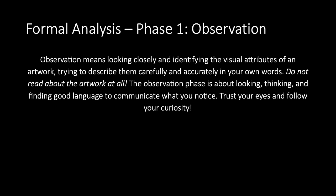The first phase of a formal analysis is the observation phase. During this phase, you're going to be looking very closely at your chosen work of art to identify the visual attributes working within it. You want to describe them carefully and accurately using your own words. This is not a research paper, so you're not going to be reading about the artwork at all. This observation phase is all about looking and thinking and finding your own language to communicate what you see and interpret. You'll spend some time looking at the work and take some notes.